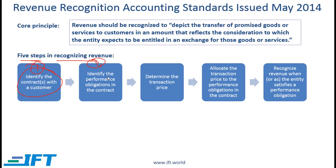Step 2 is to identify the performance obligations in the contract. The performance obligations within a contract represent promises to transfer distinct goods or services. A good or service is distinct if, first, the customer can benefit from it on its own or in combination with readily available resources, and second, if the promise to transfer it can be separated from other promises in the contract.